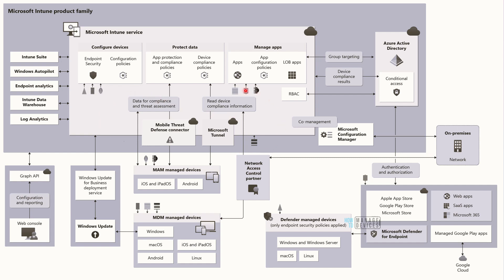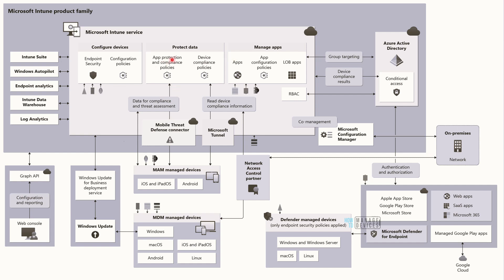Now let's look at these additional components. There is a 'Data for Compliance and Threat Assessment' section with the Mobile Threat Defense connector and Microsoft Tunnel — both are different components, with some parts inside the service and some outside. The Mobile Threat Defense connector communicates with app protection policies, compliance policies, and device compliance policies. There are also two boxes: data for compliance and threat assessment, and read device compliance information — which interacts directly with devices, collecting data and sending it to Intune service, primarily for MAM-managed devices and tunnel.